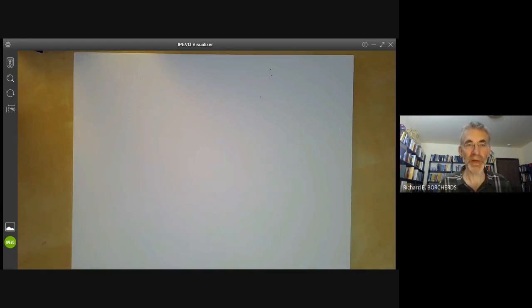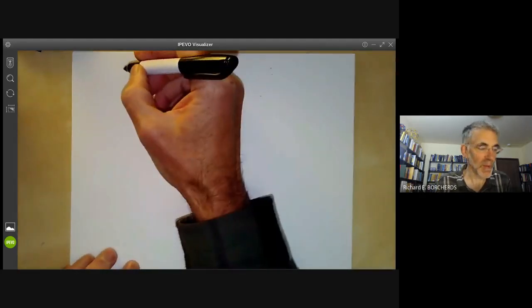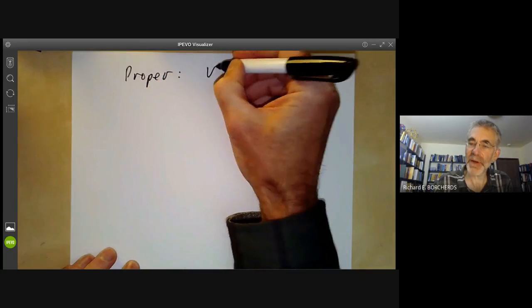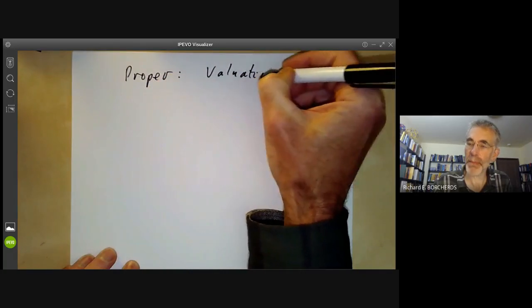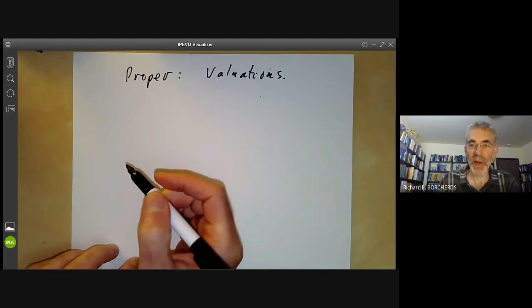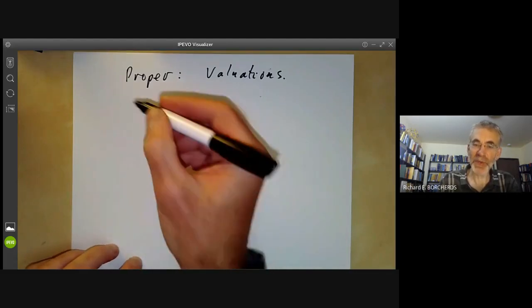This lecture is part of an online algebraic geometry course on schemes and will be about the relation between proper morphisms and valuations. What we'll do is first look at what happens in general topology.